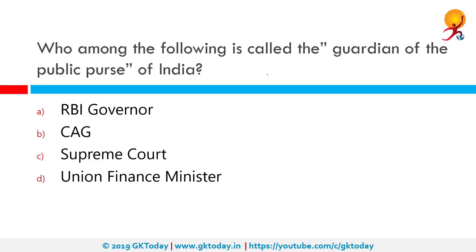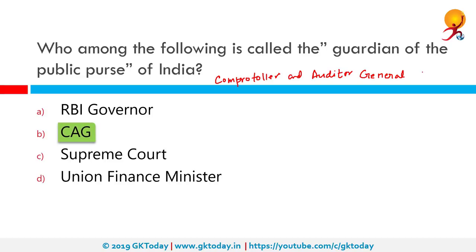Who among the following is called the guardian of public purse? That would be the Comptroller and Auditor General of India. The CAG is the person in charge of all receipts and expenditures by the Government of India, and anybody substantially financed by the government. The correct answer is CAG.